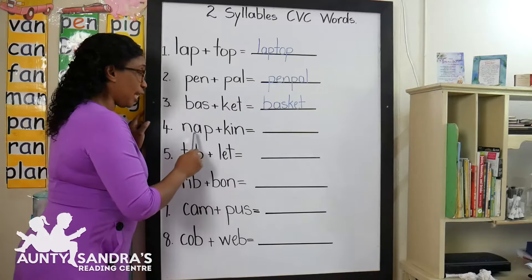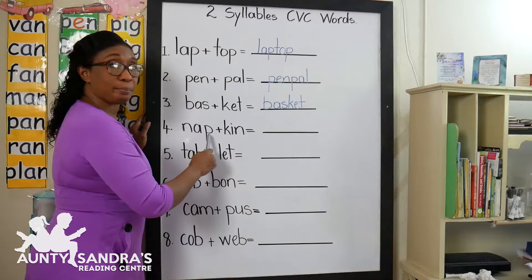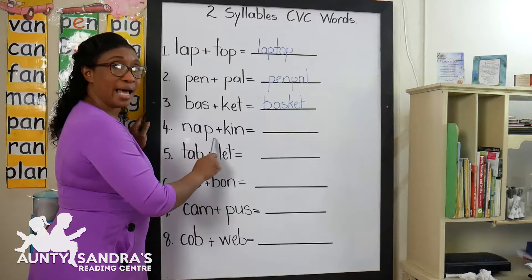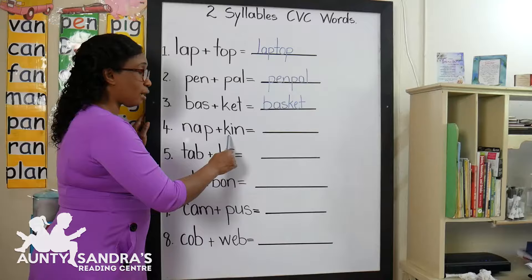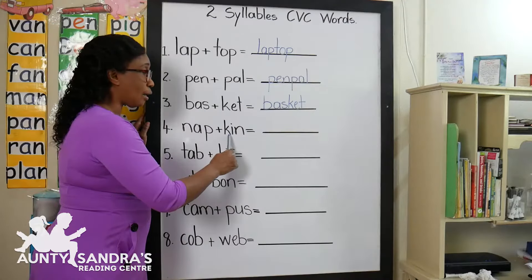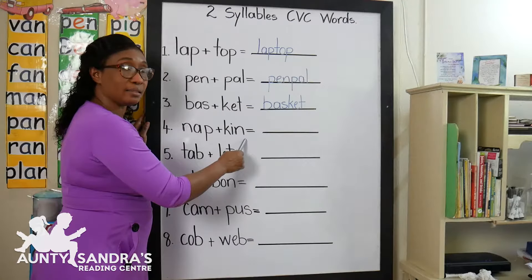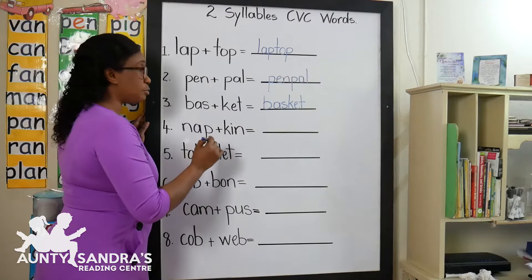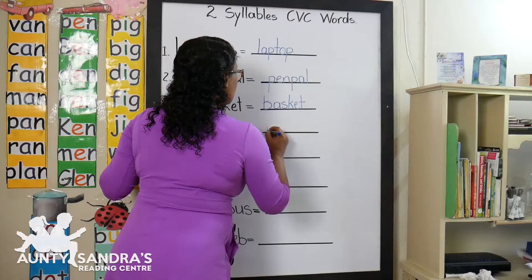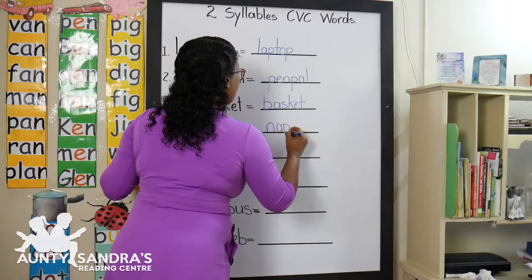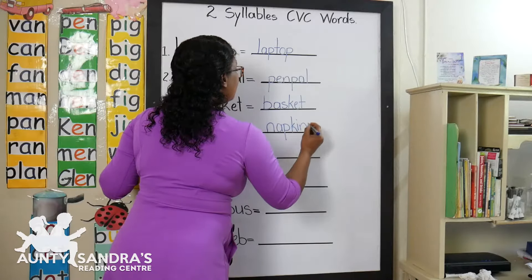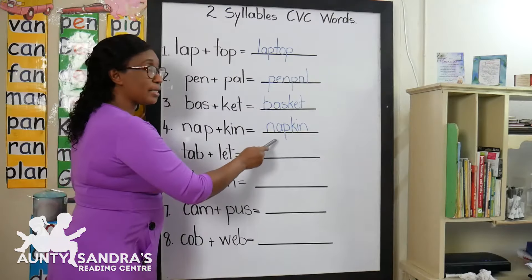The next syllable is N-A-P, Nap. And the second syllable in the word is K-I-N, Kin. So we are going to join the two syllables together to make it one word. We are going to get Nap, Kin. Put that together and you get napkin.